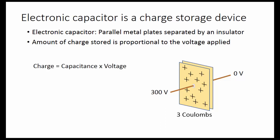The charge is equal to the capacitance times the voltage. For example, we have 3 coulombs equals 0.01 times 300 volts. The units of capacitance are coulombs per volt, also known as farads.